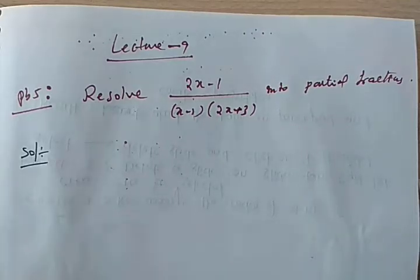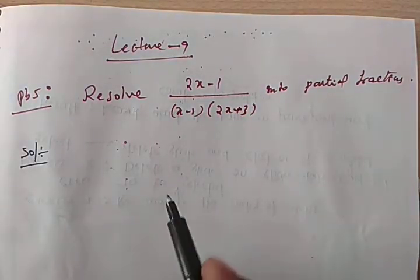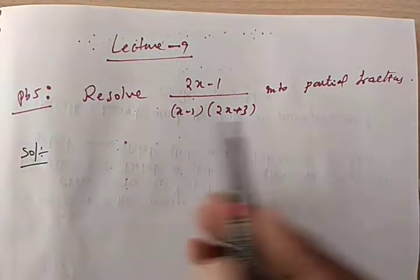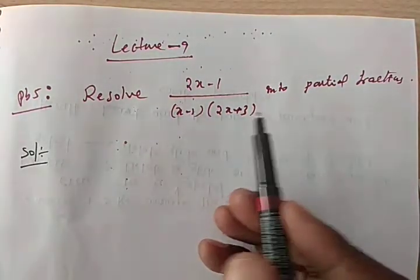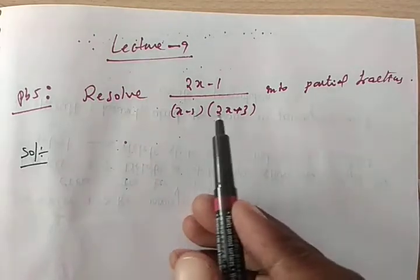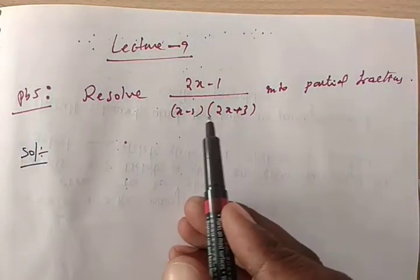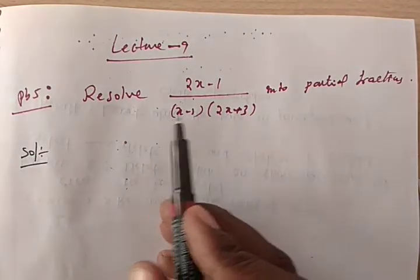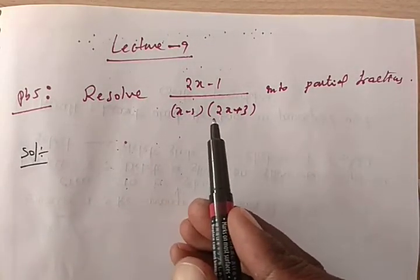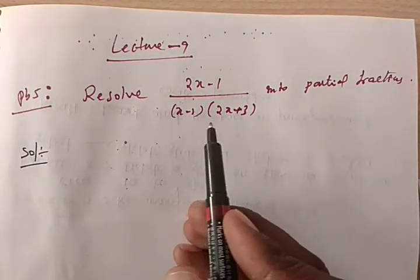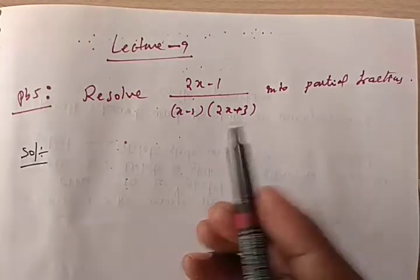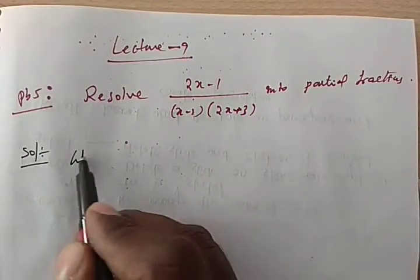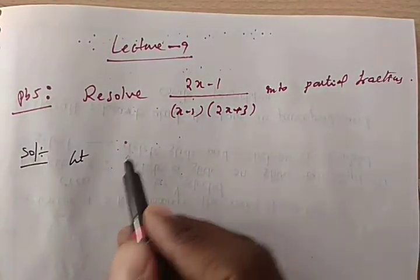Welcome to this video lecture. This is the continuation of the previous class. In this video I am going to solve this problem. This is also a Type 1 problem, because the denominator contains distinct linear factors — a product of distinct linear factors. Let us start the solution for this one.